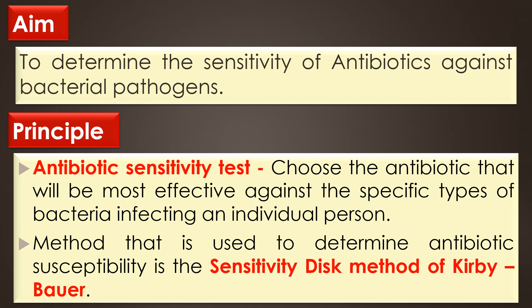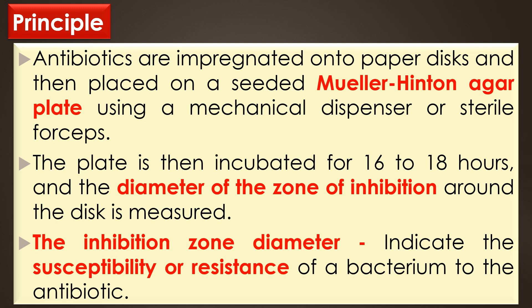This method is named after W.Q.B. and A.W. Boyer in 1966. In the KB Boyer method, antibiotics are impregnated onto filter paper discs and then placed on a seeded Muller-Hindenagot plate using a mechanical disperser or sterile forceps. The plate is then incubated for 16 to 18 hours and the diameter of the zone of inhibition around the disc is measured.